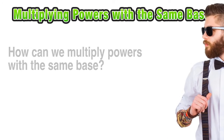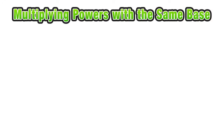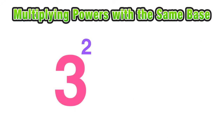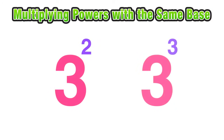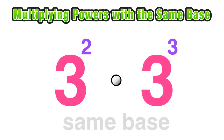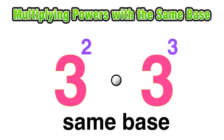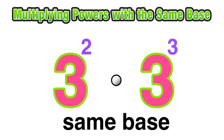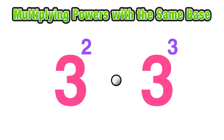So what does that mean? For example, what if we wanted to multiply 3 to the second power by 3 to the third power? Both of these have the same base, which is 3.